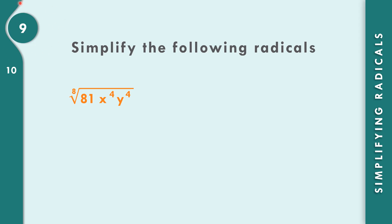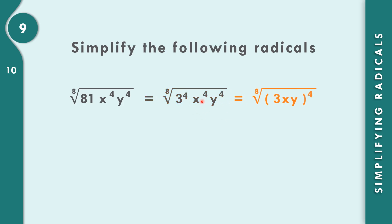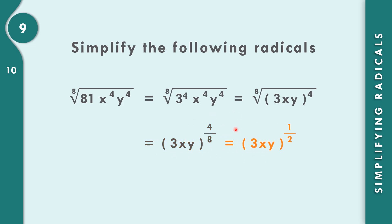For number 9, which uses the same approach as number 8: the 8th root of 81 times x to the 4th times y to the 4th. Since 81 equals 3 to the 4th power, and x and y also have exponent 4, we combine: the 8th root of (3xy) to the 4th power. Writing 4 over 8 and reducing: 4 divided by 4 is 1, and 8 divided by 4 is 2, giving 1 half. The final answer is the square root of 3xy.